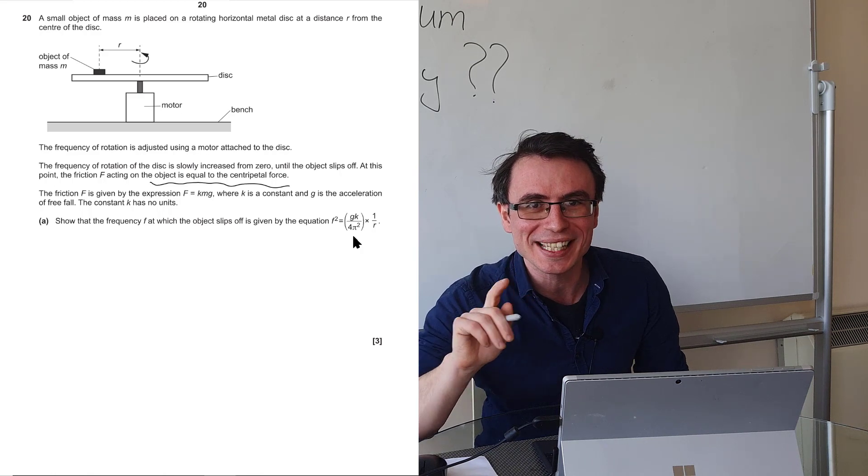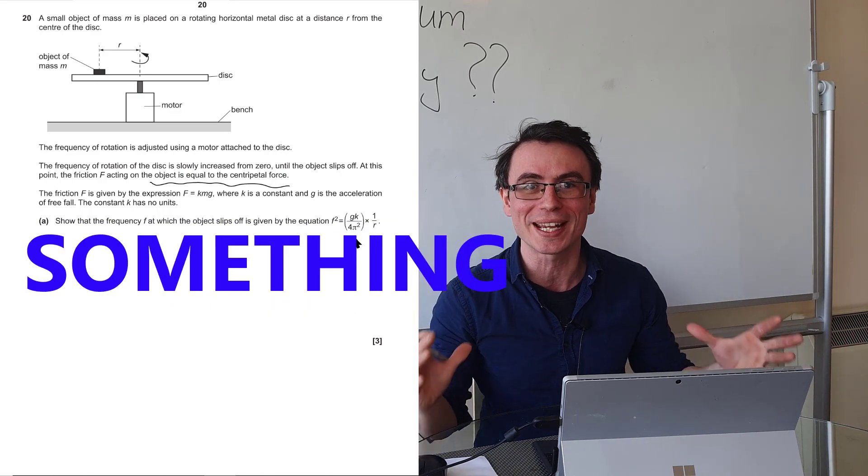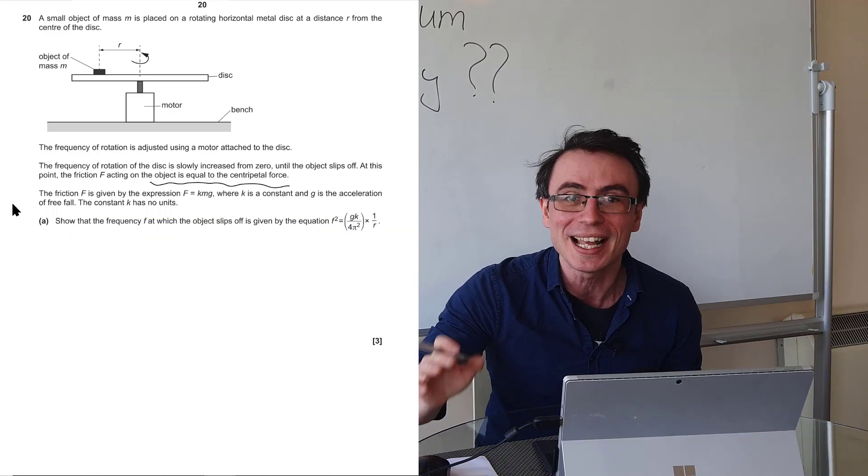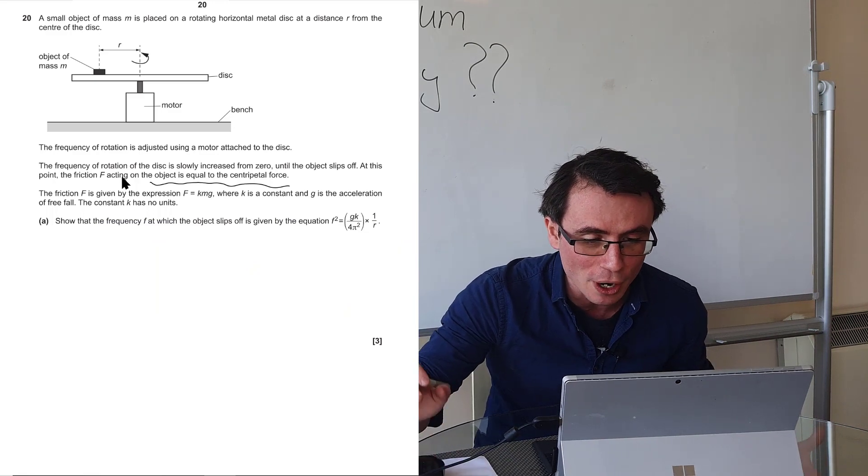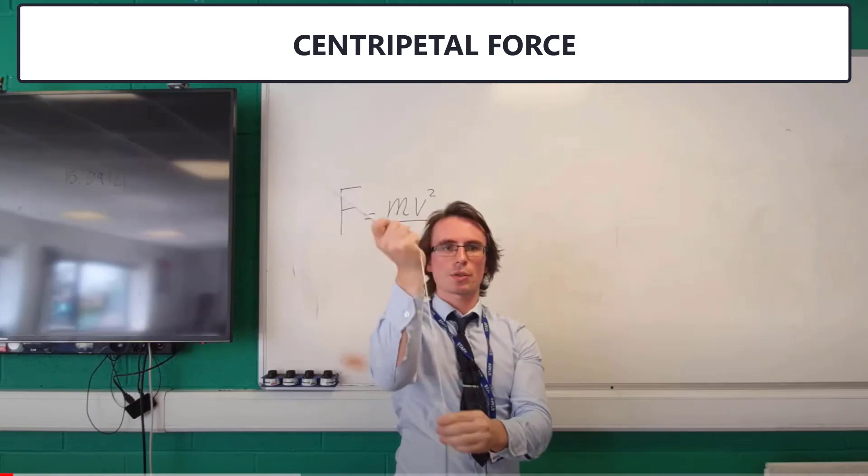The best thing to do in this case is to write down something that we know is definitely true. In this case we're given that the force acting on the object f, the frictional force, is equal to the centripetal force.